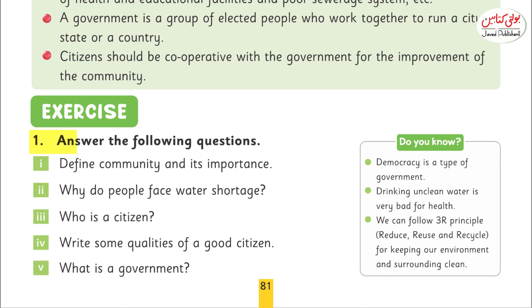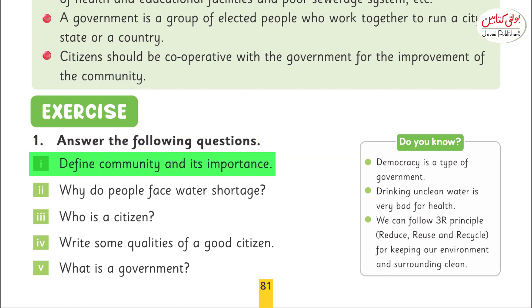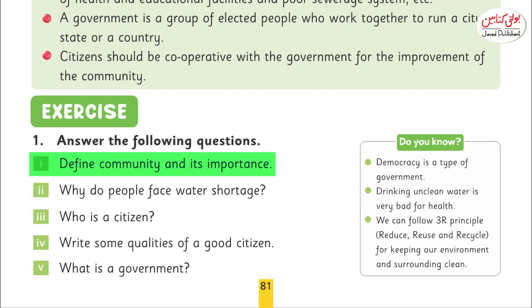Answer the following questions. Define community and its importance. A community is a group of people who live together in a particular area. People in a community cooperate with one another and they solve many problems that seem too big for a single person to solve.